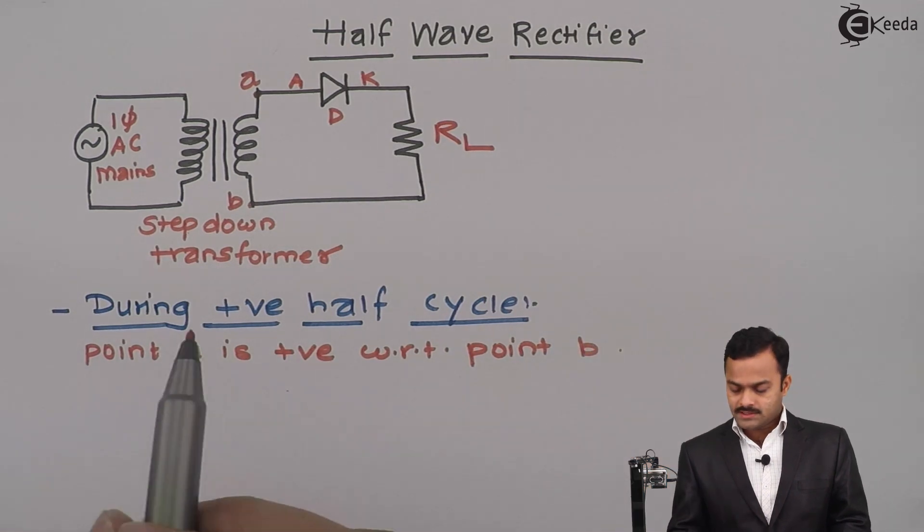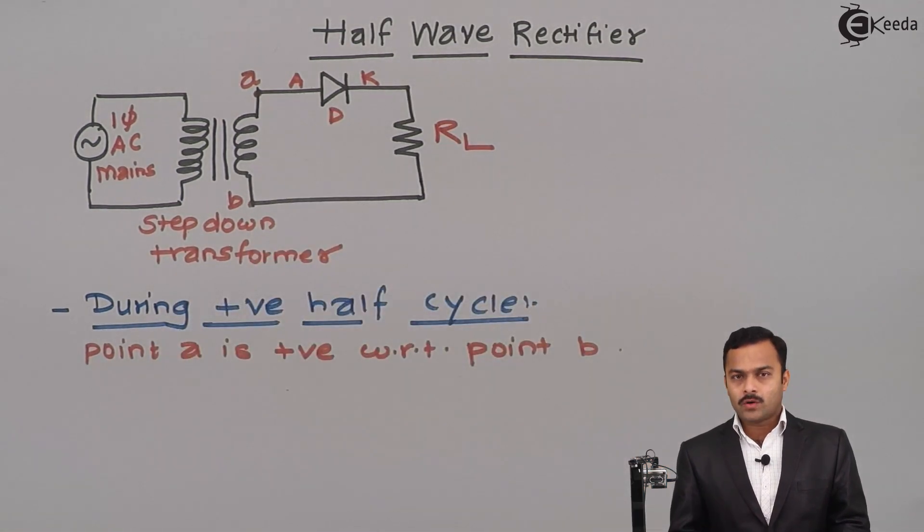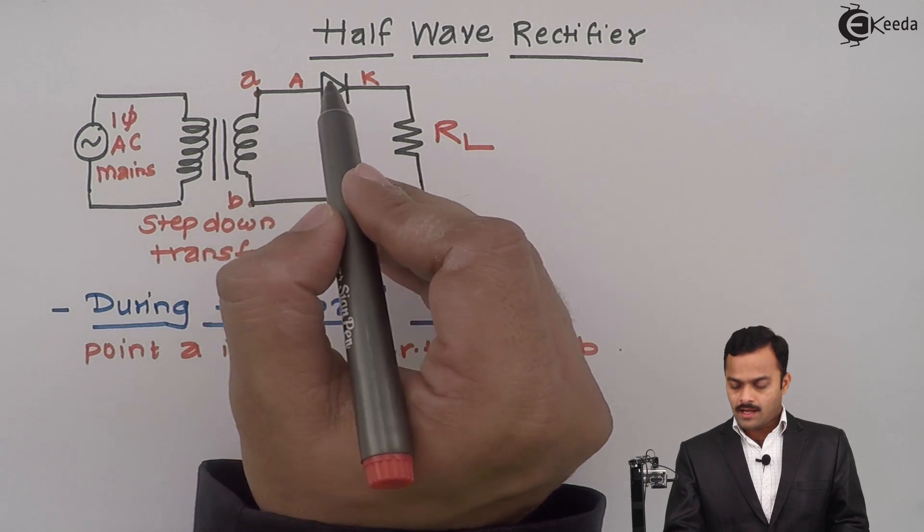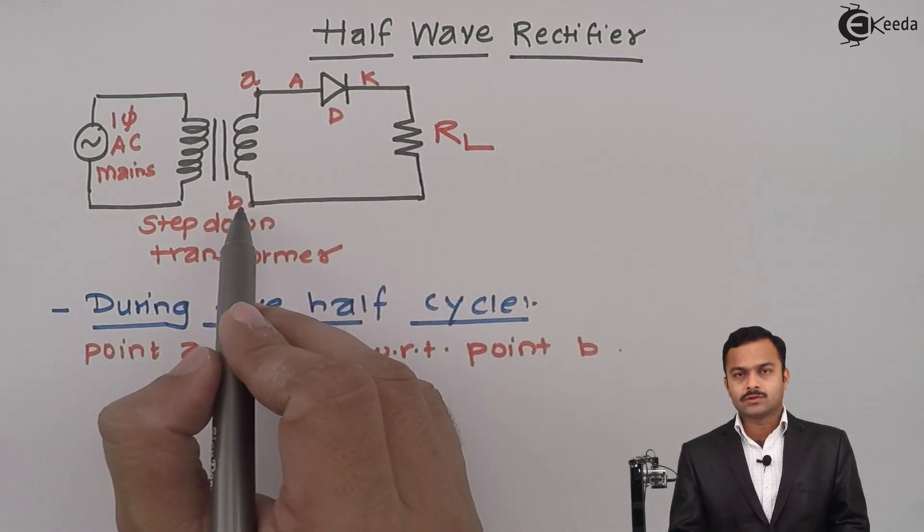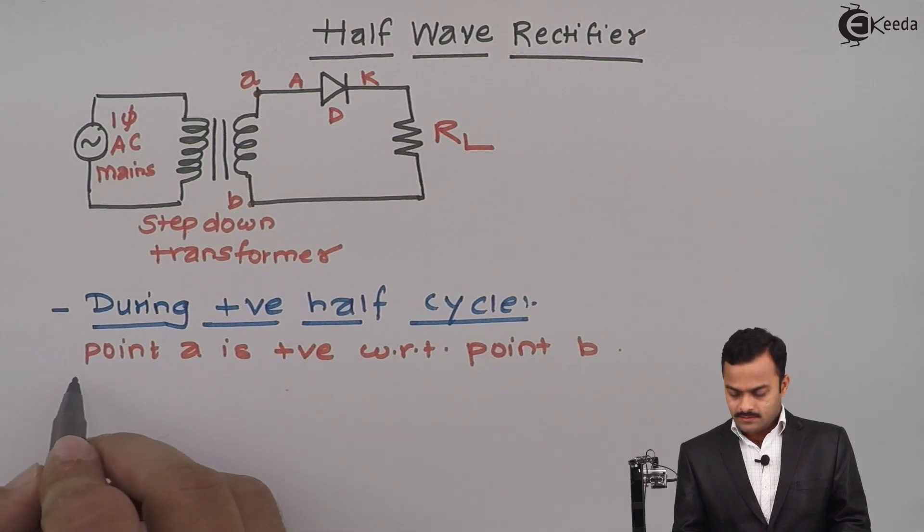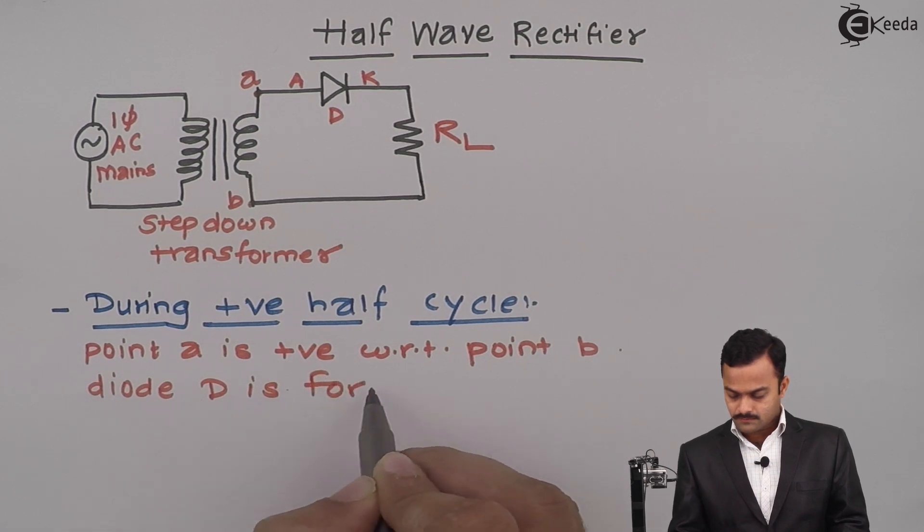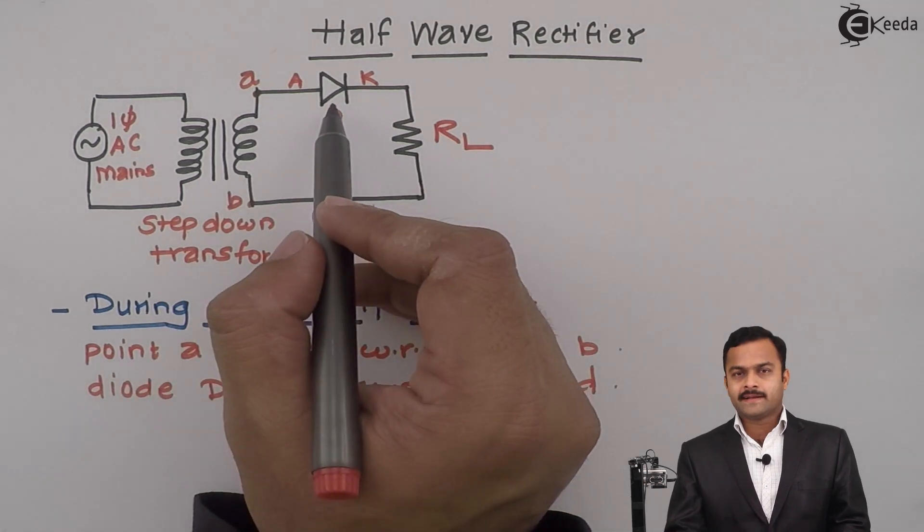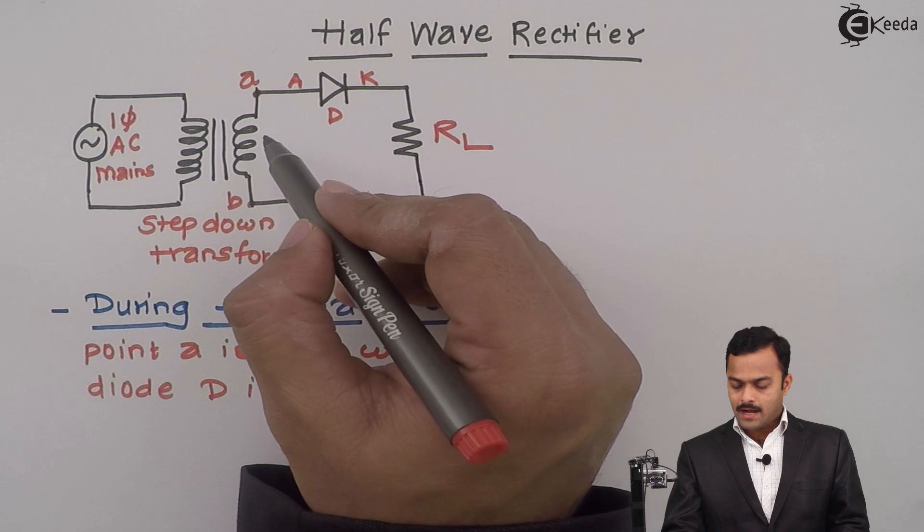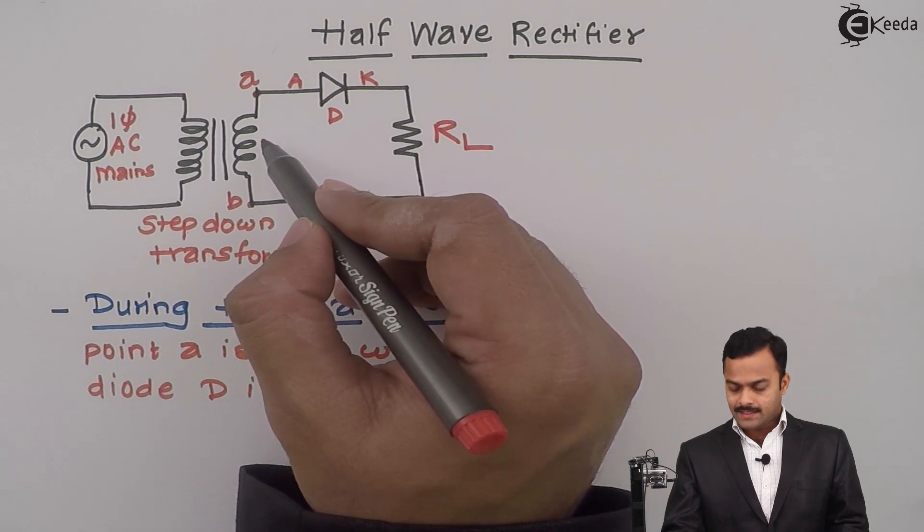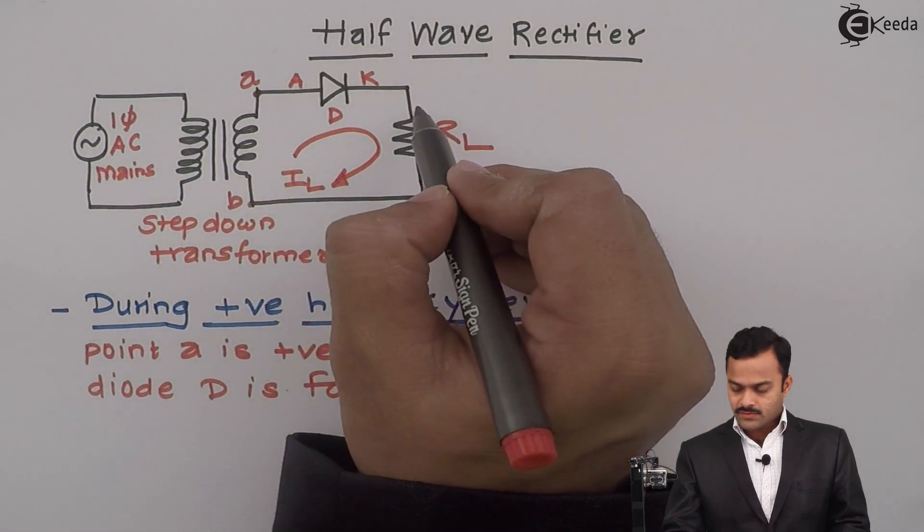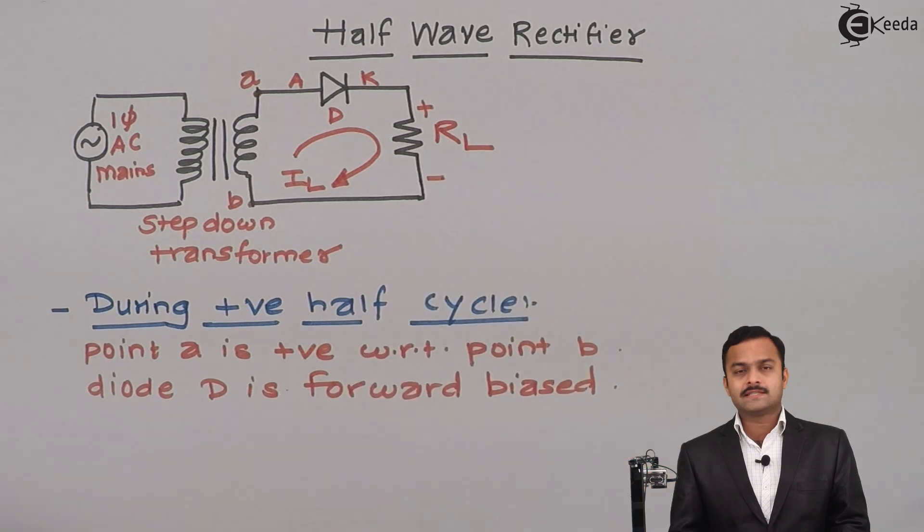Because of which, this diode D will be forward biased. Why? Because the positive terminal is connected to the anode and cathode through load resistance connected to negative. So diode D is forward biased, because of which diode D conducts a current which will pass through the secondary of the transformer and the load resistance in this direction, and this will develop a voltage across the load resistance of this polarity.